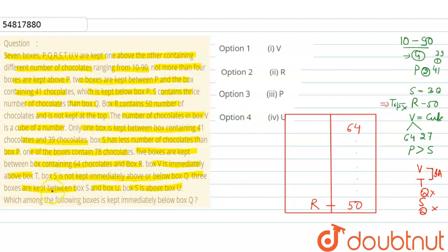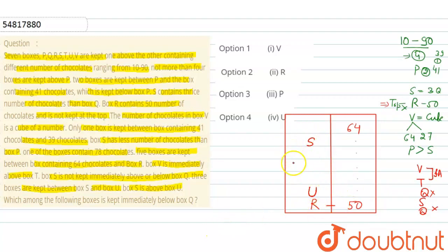Box S is above box U with 3 boxes kept between them. So if we place S and U in the arrangement, there must be exactly 3 boxes between them, with S higher up. Let's now place these boxes considering the conditions we have.